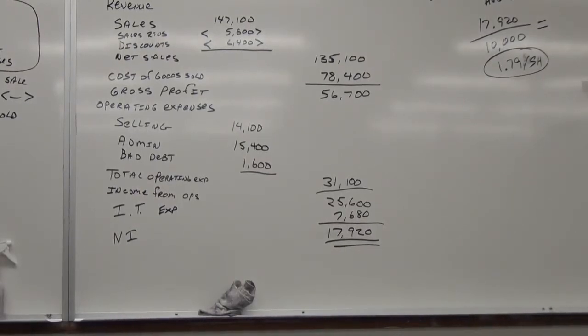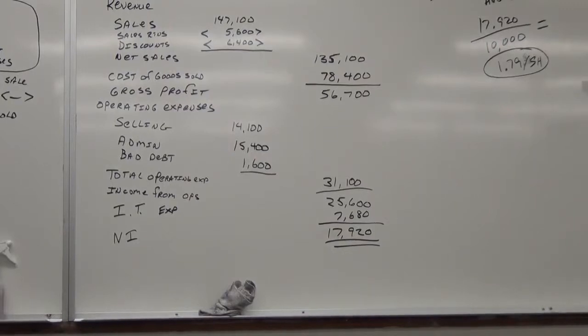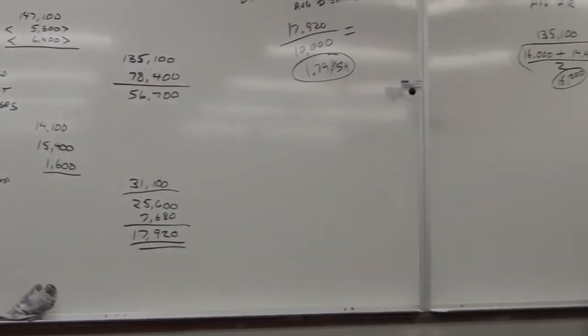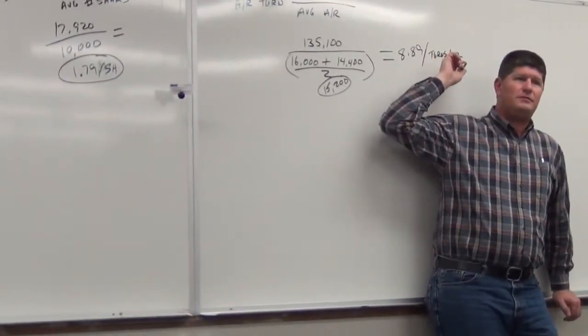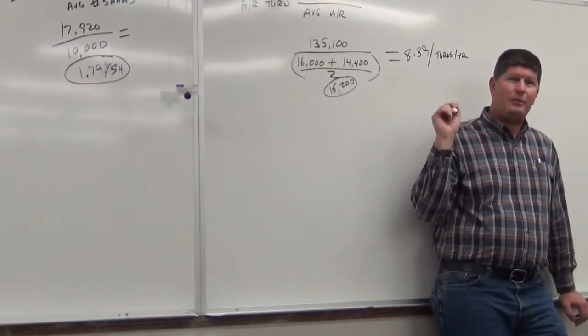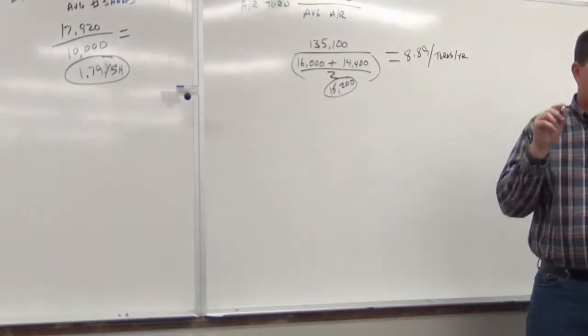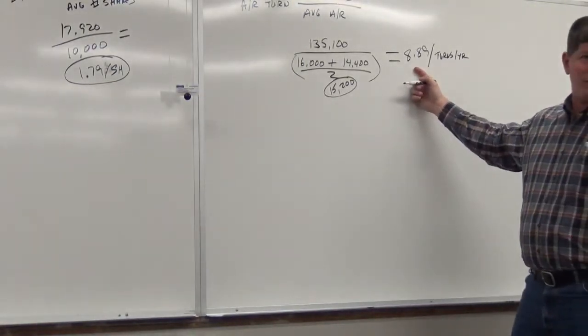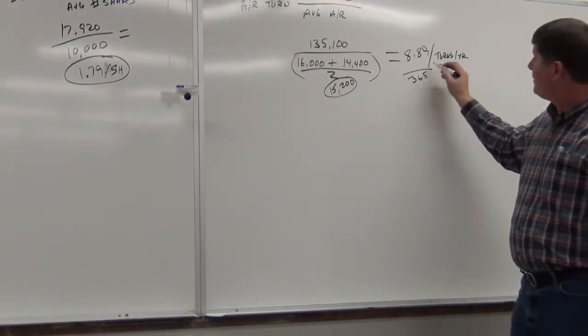So, it gives them to us. Okay. What's the beginning? That's $16,000. And the ending? $14,400. Divide by 2. Beginning plus ending divided by 2. So, $135,000 divided by? $15,200. Oh, this is $15,200. All said and done. So, $135,000 divided by $15,200 is? $8.89.